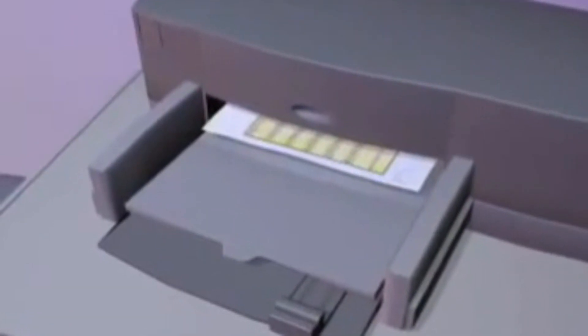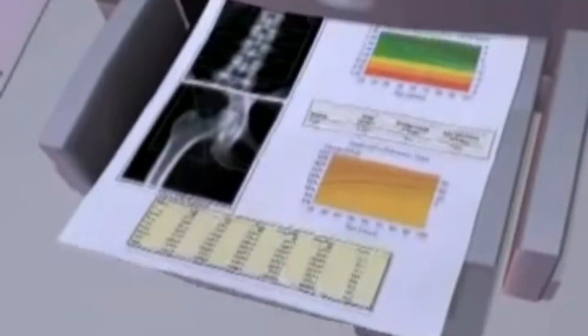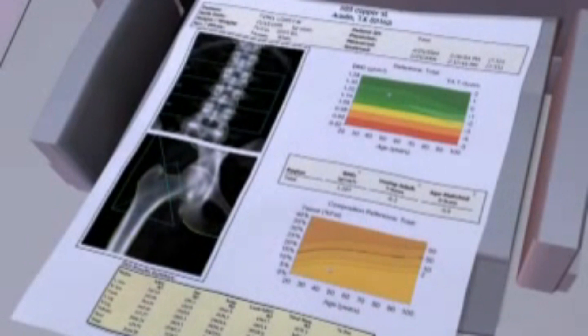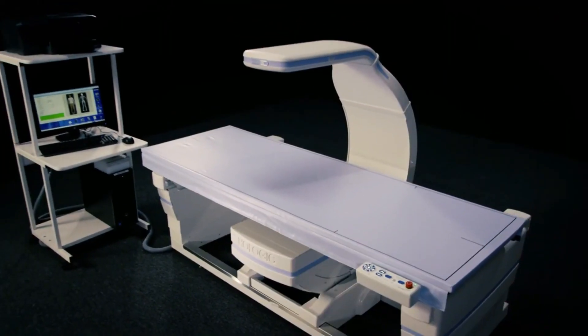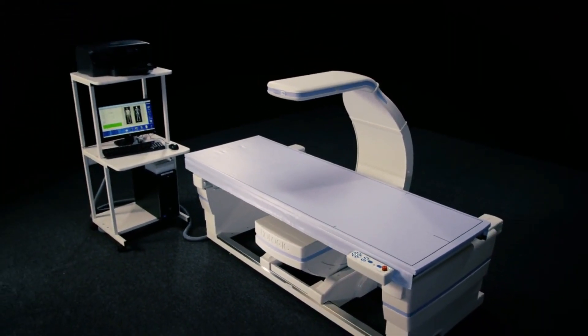DXA scanning focuses on two main areas, the hip and the spine. If you can't test those, you can get a DXA scan on your forearm. These areas can give your doctor a good idea of whether you're likely to get fractures in other bones in your body.